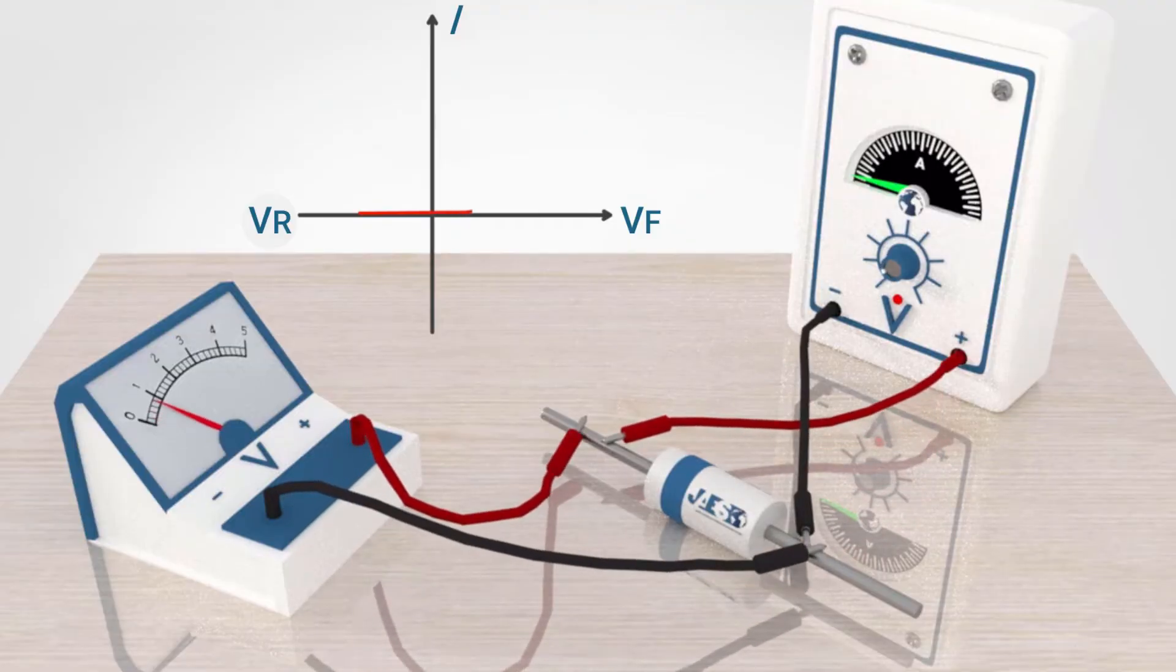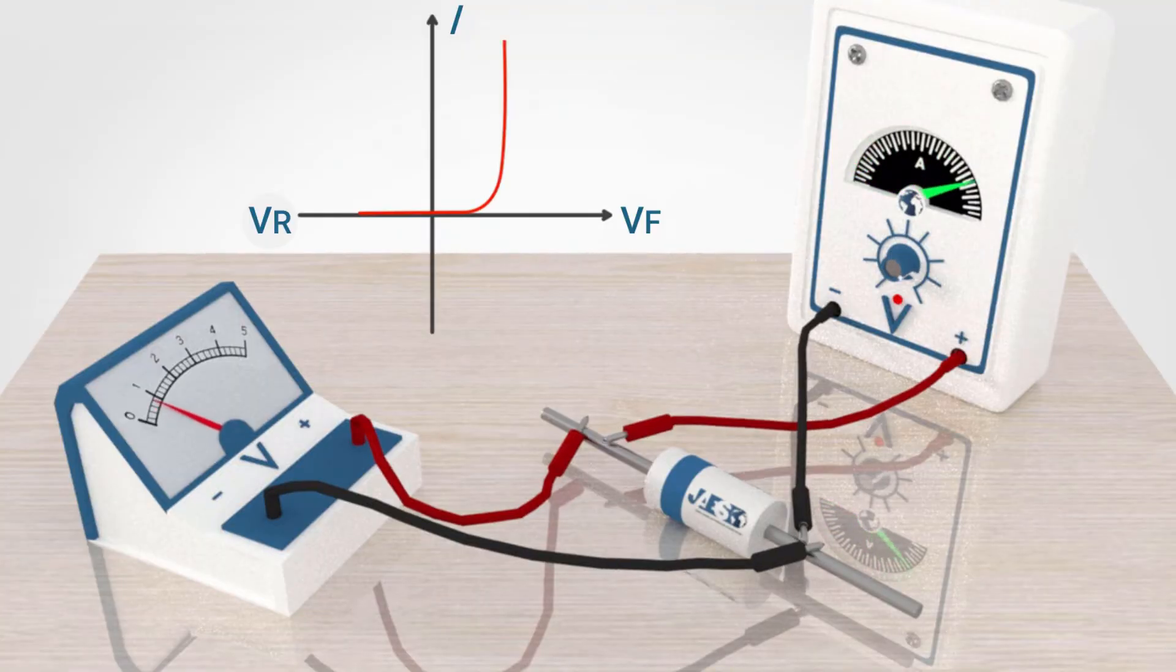In direct polarization and voltage lower than 0.7 volts, a negligible current is observed. But as soon as this potential barrier is overcome, there will be a strong increase in current.